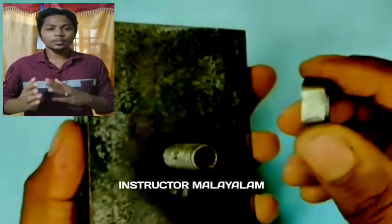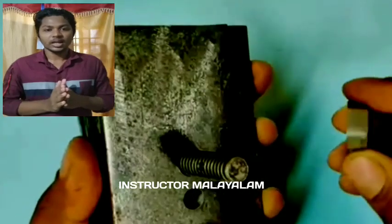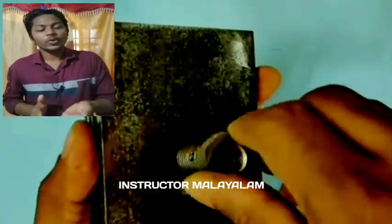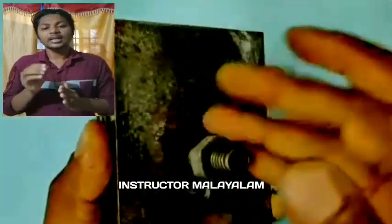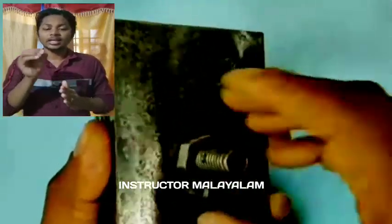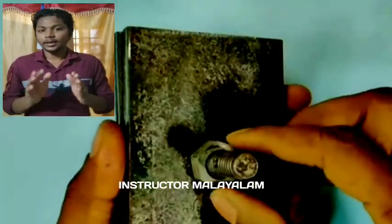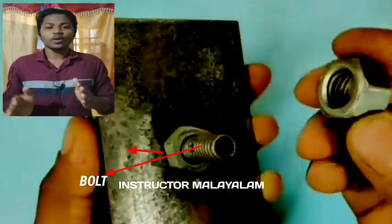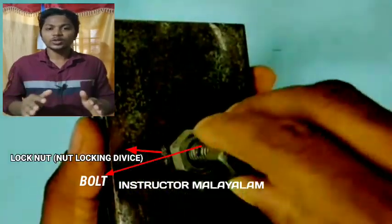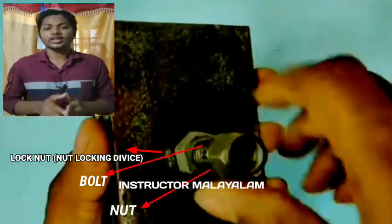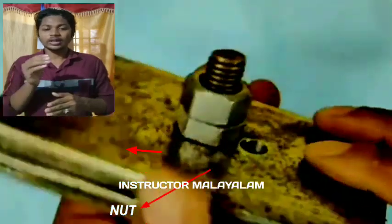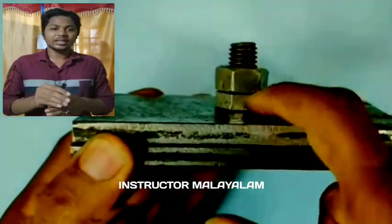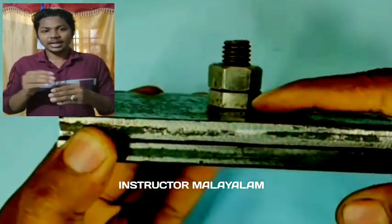This is called the first test. The first test is known to get a fastener. How do we identify a fastener? What is the name of fastener? Fastener is the need for the nut, bolt, rivet, retaining clips.